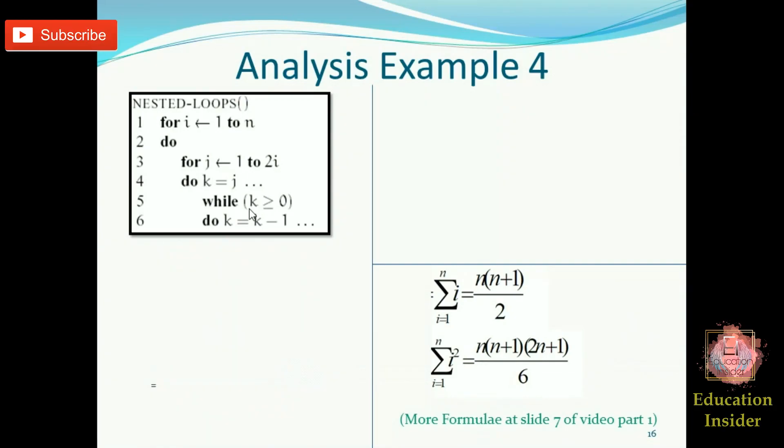So step 1 will be something like this: it will run j times and an extra operation which will take one constant time. Now step 2 is the middle for loop.